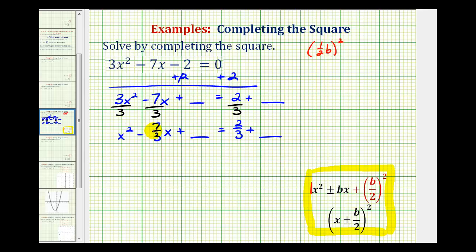Since in this problem b is the fraction -7/3, let's determine what the constant needs to be. We're going to have 1/2 times -7/3, and then we're going to square this. So this is going to be (-7/6)², which is going to equal 49/36.